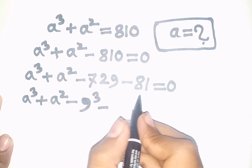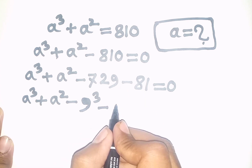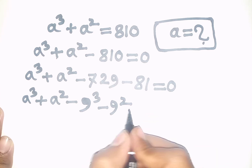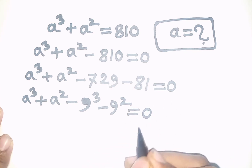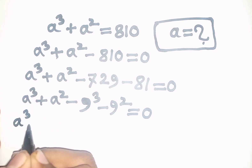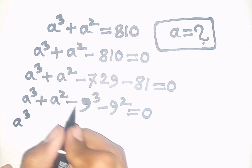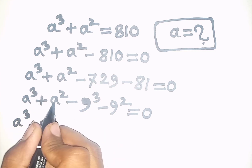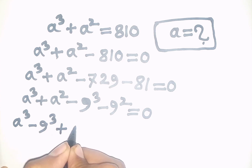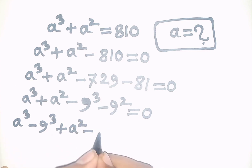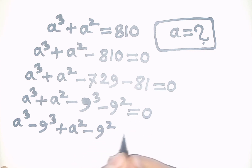Then minus 81 is the same as negative 9², then is equal to 0. Now we can write here: a³ minus 9³, then plus a² minus 9², then is equal to 0.